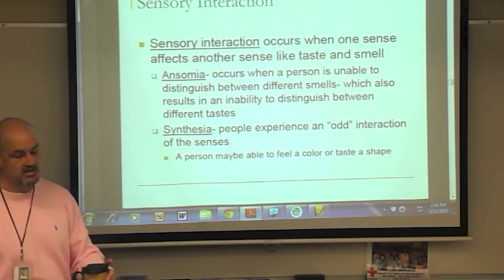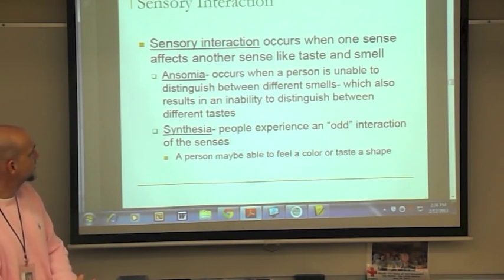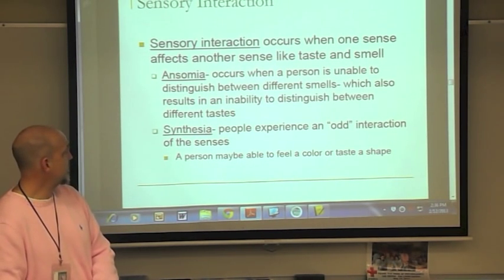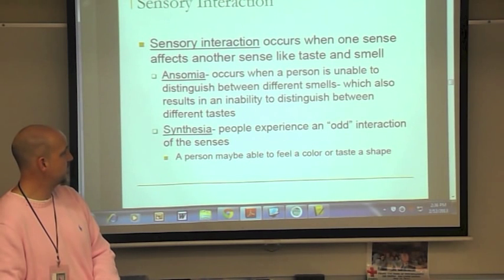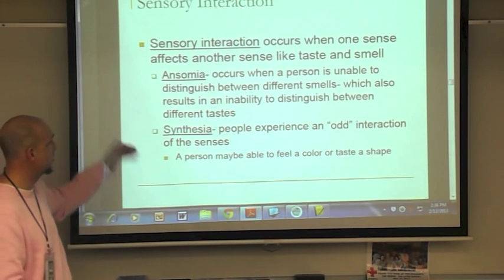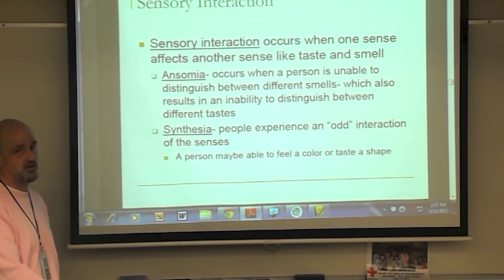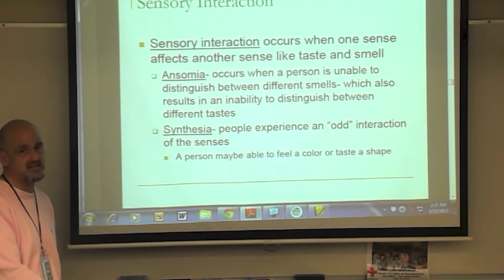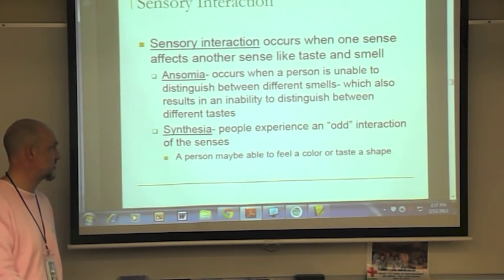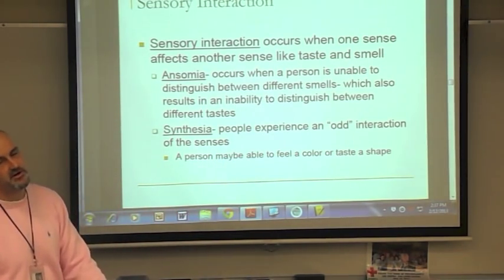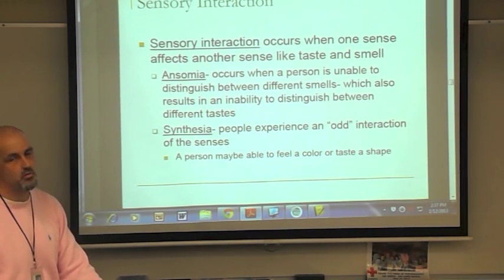Sensory interaction occurs when one sense influences another — smell and taste are an example. Anosmia occurs when a person is unable to distinguish between different smells, and because of sensory interaction, this also results in inability to distinguish between different tastes. Some people with colds can't smell and notice they can't taste as well. Synesthesia is a rare phenomenon where people experience odd interactions between senses — a person may feel a color or taste a shape.